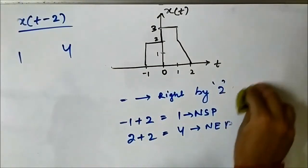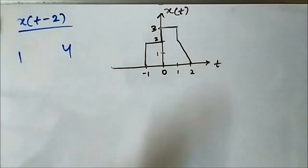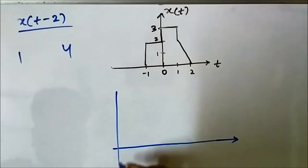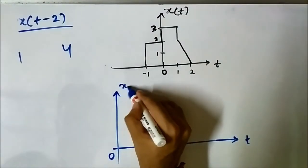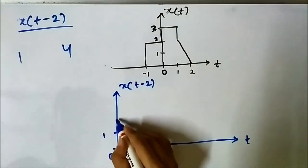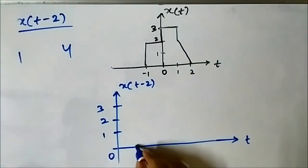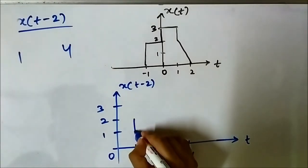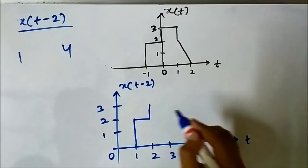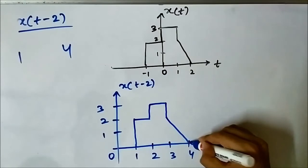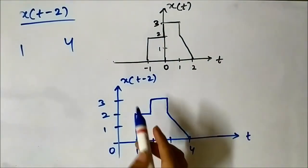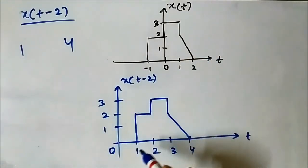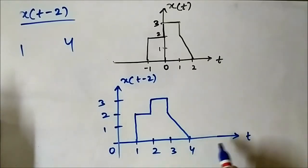Now let us perform the shifting. It is all on the positive axis — 1 and 4. This is the shifting to the right side by 2 units. The new starting point is 1 and the new ending point is 4. All the remaining things are the same: the shape, the amplitude, everything stays the same. Just the starting and ending points have changed.